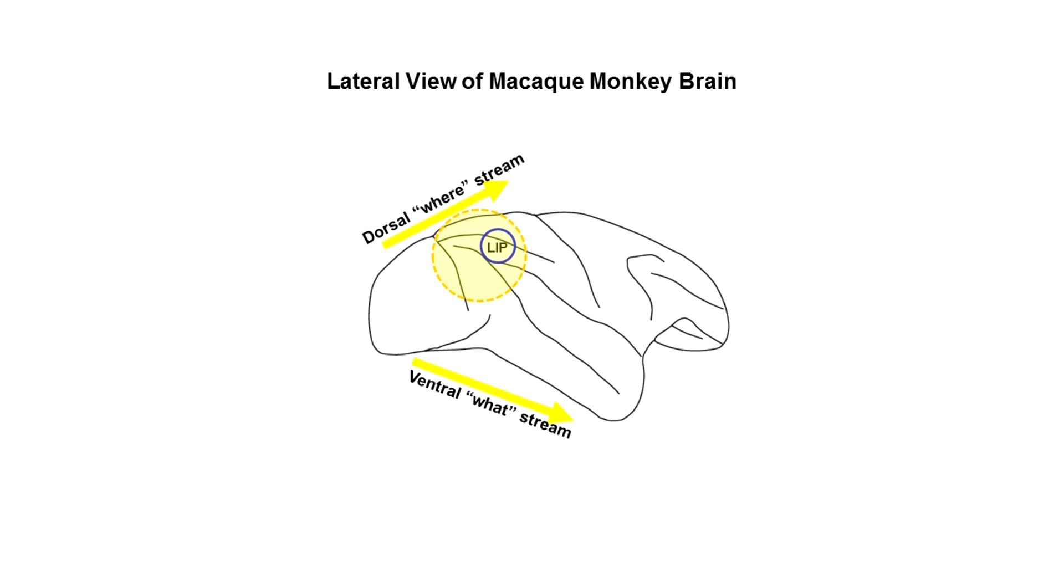In a series of studies, we have trained monkeys to perform a variety of visual categorization tasks and have found particularly strong category encoding in LIP.